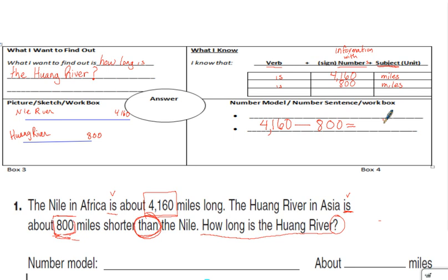Go ahead and do the math. 4,160 take away 800. Zero take away zero is zero. Six take away zero is six.